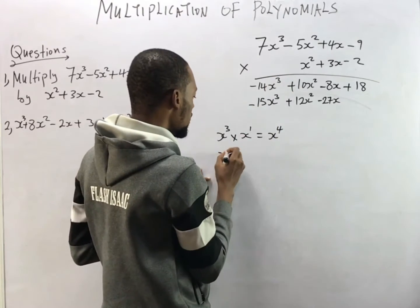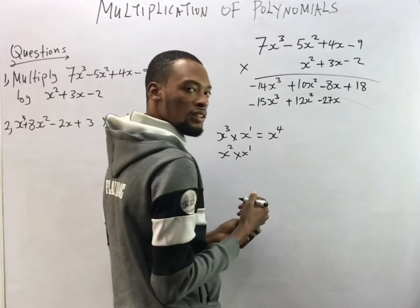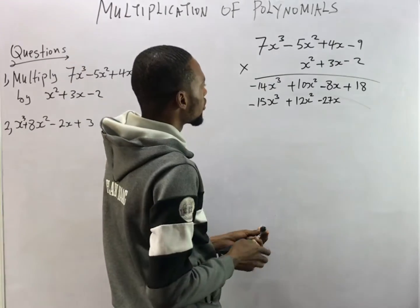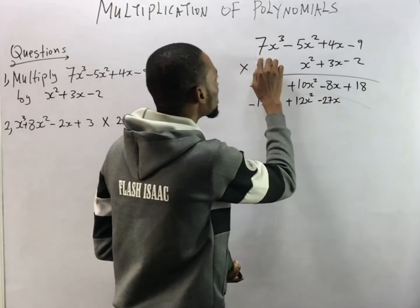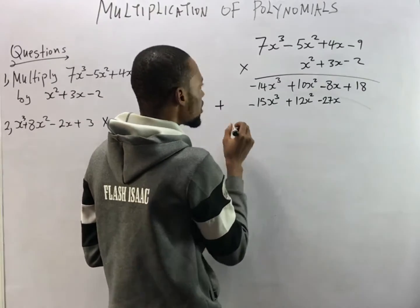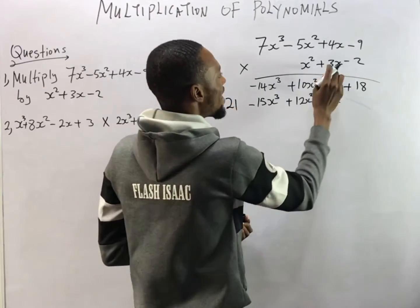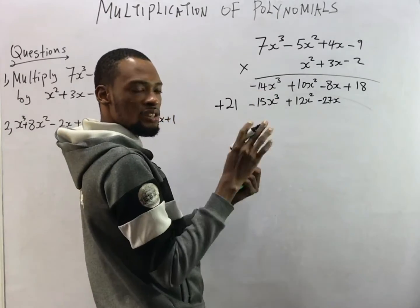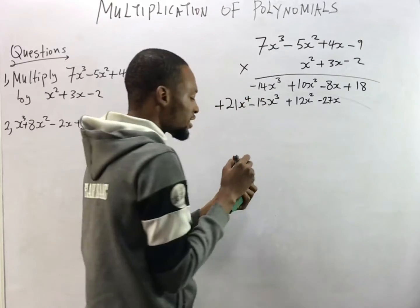For example, s² times s is s² times s¹, and adding the exponents gives s³. Now, plus 3s times 7s³: this is already positive, 3 times 7 is 21, and s times s³ gives s⁴. So this second step gives us: minus 27s, plus 12s², minus 15s³, plus 21s⁴.